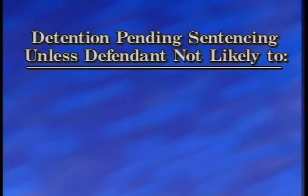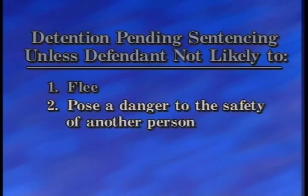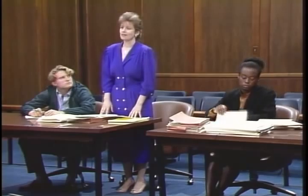In this section, we'll discuss release or detention of convicted offenders pending sentencing and pending appeal, revocation of probation or supervised release, and correction or reduction of sentence. Under the Bail Reform Act of 1984, 18 U.S.C. Section 3143(a), the court must order a convicted defendant detained while awaiting sentencing unless it finds by clear and convincing evidence that the defendant is not likely to flee, not likely to pose a danger to the safety of any other person, and not likely to pose a danger to the community if released. The burden of persuasion on these three points rests with the defendant.